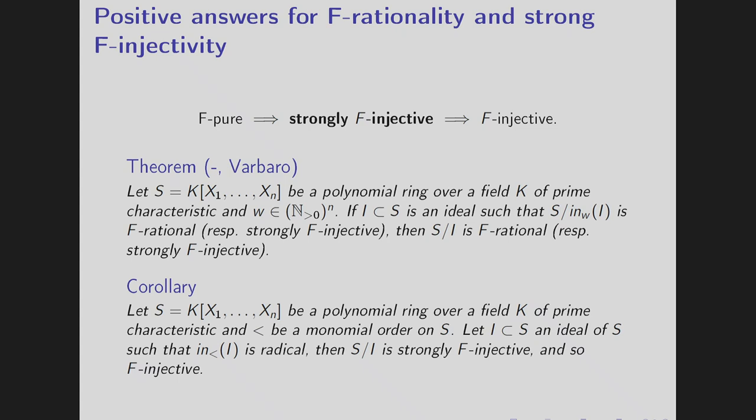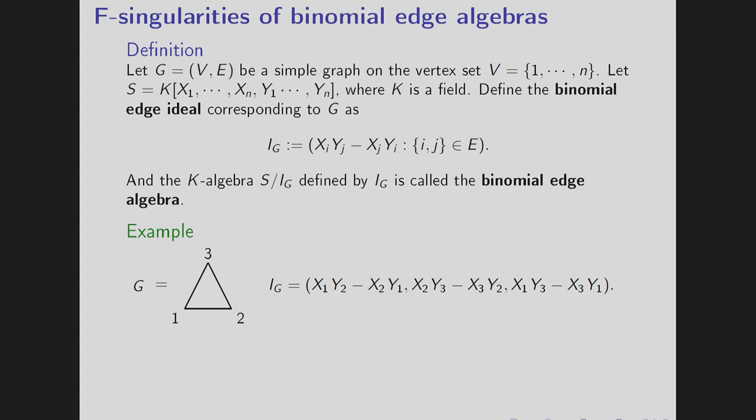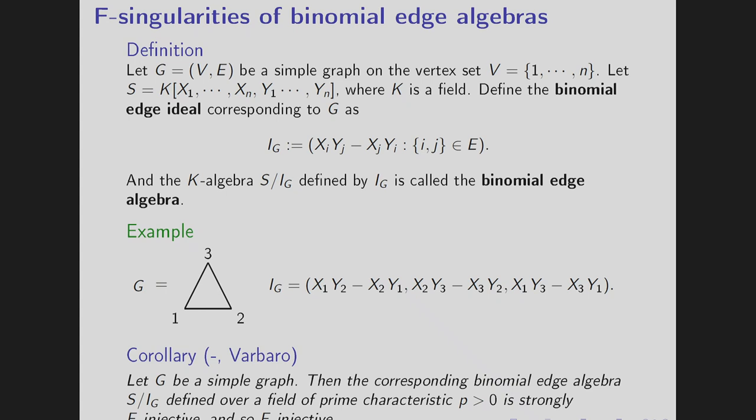And this example gives various F-singularities of various kinds of algebras. First one is the binomial edge algebras. So given any graph we can define a binomial ideal which is called binomial edge algebras. And it is known that there exists an ordering such that the initial ideal is square free. Hence as a corollary we get that the binomial edge algebras is always F-injective.